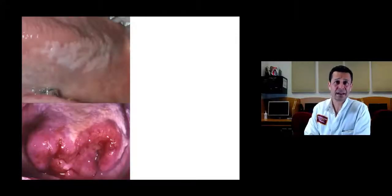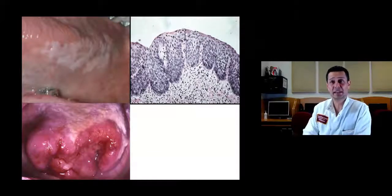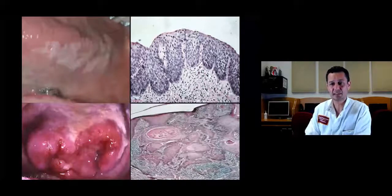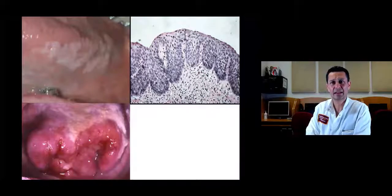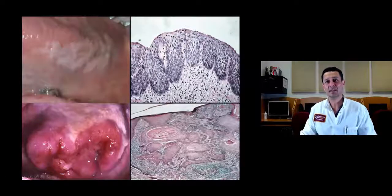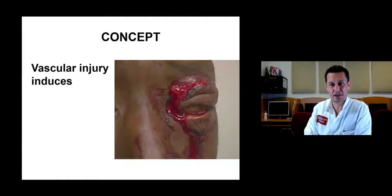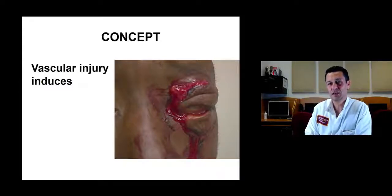Back to the leukoplakia, dysplasia, and squamous cell carcinoma example. The concepts of inflammation — redness, heat, swelling, and pain — don't necessarily apply to cancers until they're at a more advanced stage. Early on, there may actually be no signs or symptoms except just a white plaque or a red-white plaque. Versus with inflammation, there's often pain or some type of sign that vascular injury has occurred.